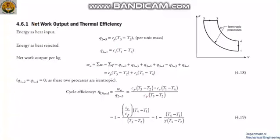We will derive the expression for net work output and thermal efficiency. The energy input is from process 2 to 3, which is at constant pressure, so Q_23 equals Cp times (T3 minus T2). The energy rejection is from process 4 to 1, which is a constant volume process, so Q_41 equals Cv times (T1 minus T4).